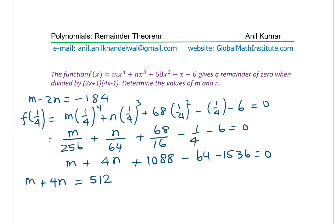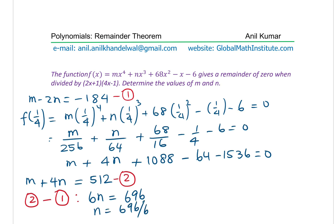So our two equations are: Equation 1: M - 2N = -184, and Equation 2: M + 4N = 512. To eliminate M, we perform Equation 2 minus Equation 1: 4N - (-2N) = 6N, and 512 - (-184) = 696. So 6N = 696, which gives N = 696 ÷ 6 = 116.